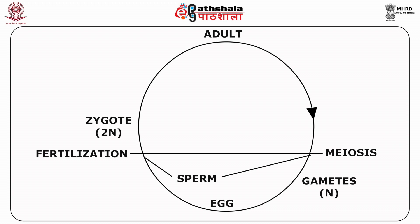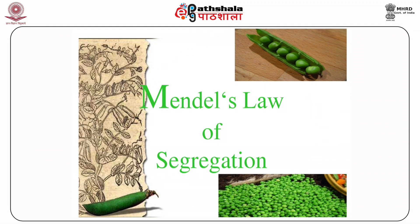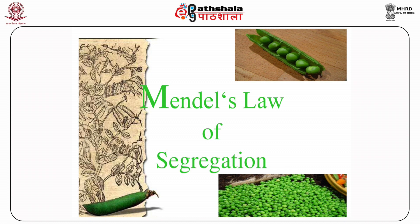Because allele pairs separate during gamete production, a sperm or egg carries only one allele for each inherited trait. When sperm and egg unite at fertilization, each contributes its allele, restoring the paired condition in the offspring. This is known as the law of segregation.